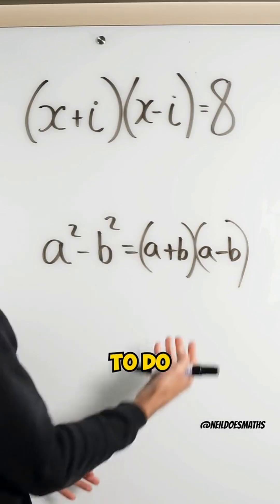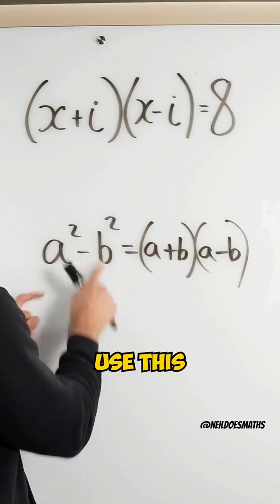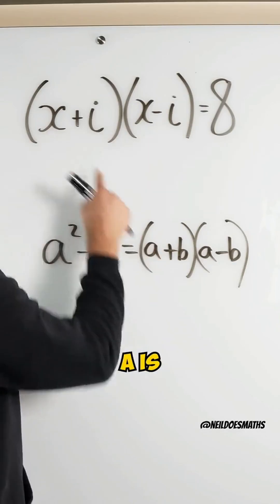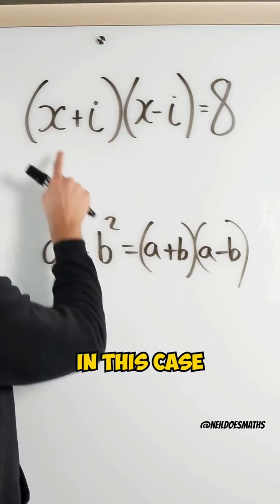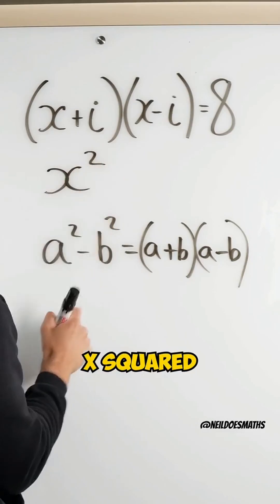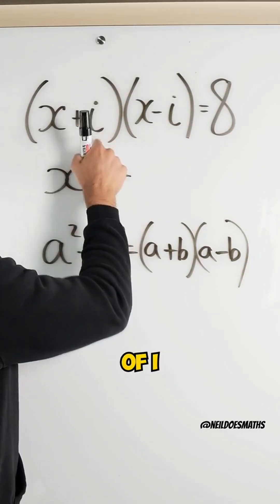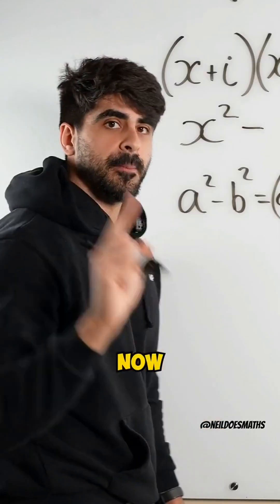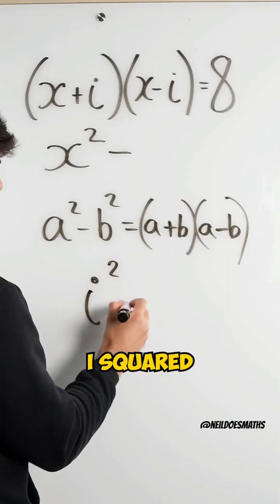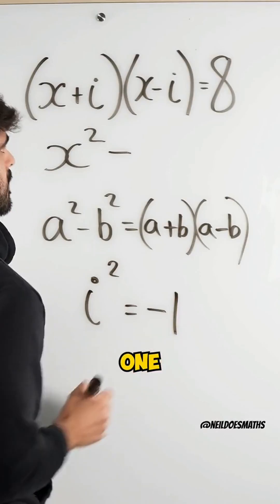All we need to do is expand the brackets — we can just use this. So we just need to square this term. You can see a is x in this case, so we square this term: x squared minus the square of i. Now, by definition, i squared — the complex number i squared — is minus one.